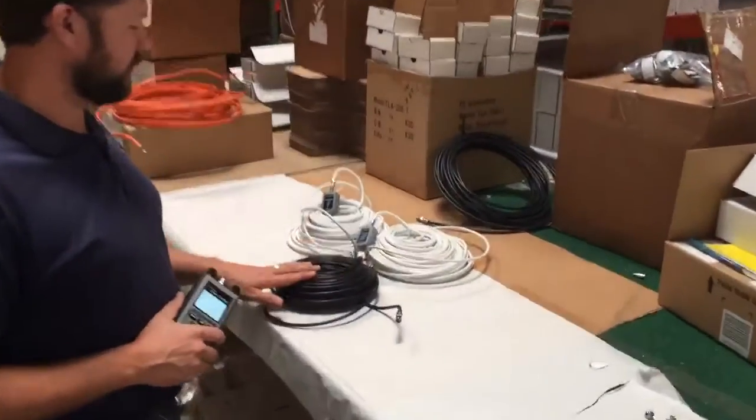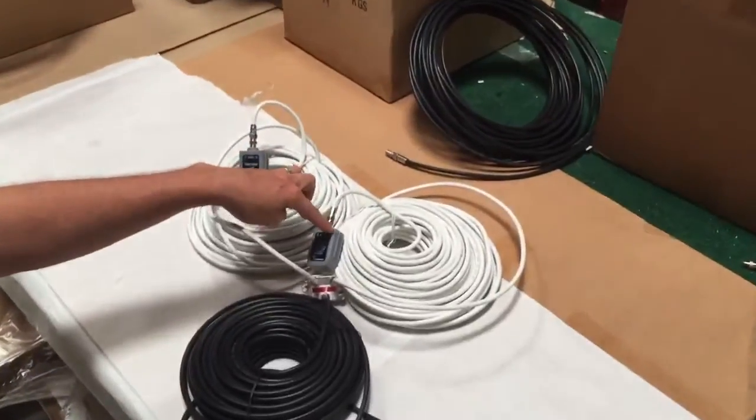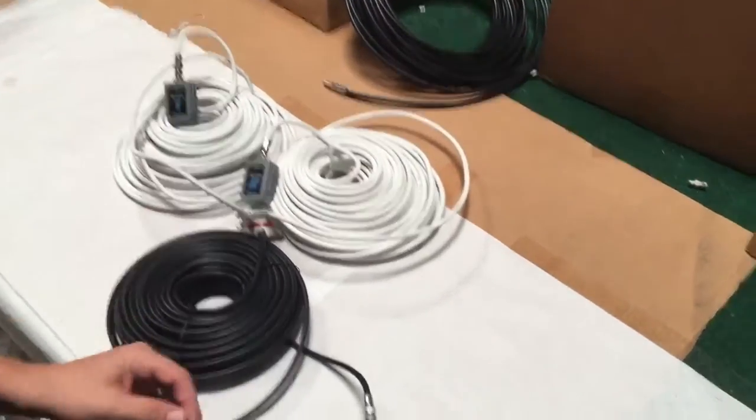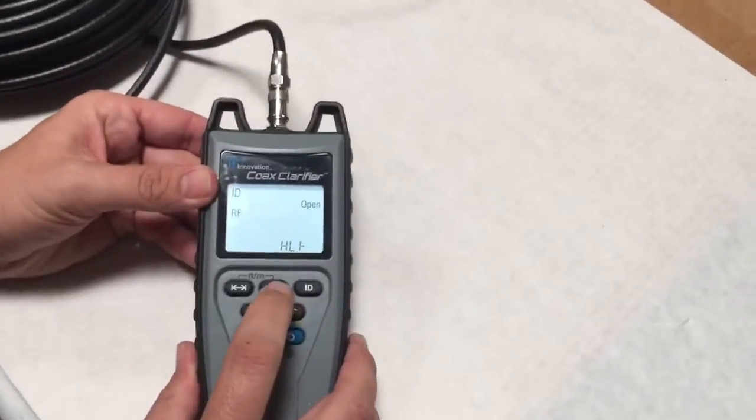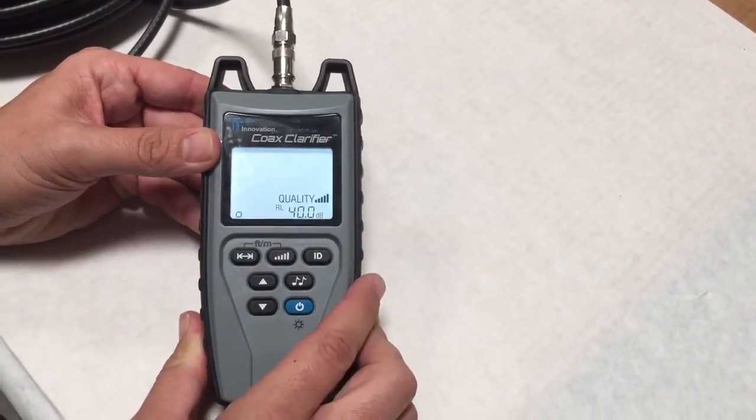Here we have a small coax network we built with a couple RF coax remotes and a splitter. All you need to do is plug the coax clarifier into the system, hit the quality button, then you get a result right away.